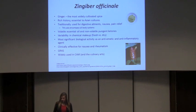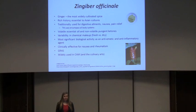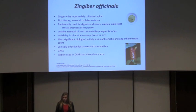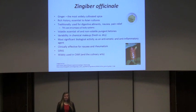In conclusion, ginger — the most widely cultivated spice today — has a rich history, is essential to Asian cultures and cuisines, and is traditionally used for digestive ailments, nausea, and pain relief, though traditional medicine shows it has been used for ailments of all body systems. The volatile essential oil and non-volatile pungent components are the most important constituents of the rhizome, and their composition varies with the rhizome's condition — making standardization of ginger extract critical for future research. The most significant biological activities are as an anti-emetic and anti-inflammatory agent, with additional anti-cancer, antibacterial, and antifungal properties. It is clinically effective for nausea and rheumatism, generally recognized as safe, and widely used in complementary and alternative medicine and culinary arts.